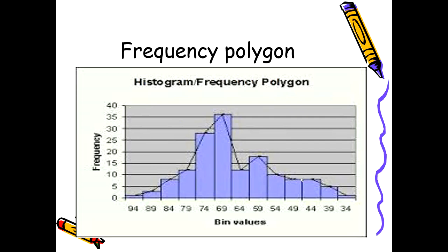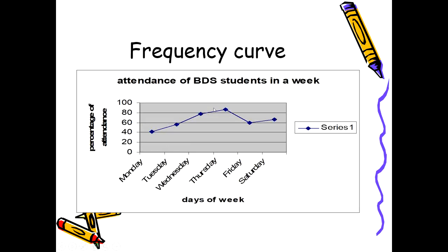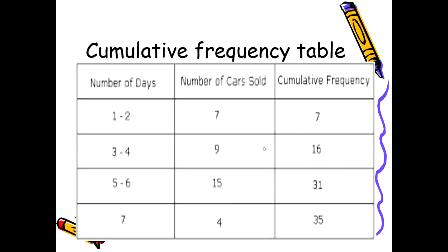The frequency polygon can be presented by retaining the bars, or the researcher may opt to remove the bars and just present the frequency curve. For example, the frequency curve can show the attendance of BDS students across the days of a week, with percentage on the y-axis. It shows how attendance increases on a specific day and then declines again. We also have cumulative frequency tables, where frequencies are continuously added up with each row.